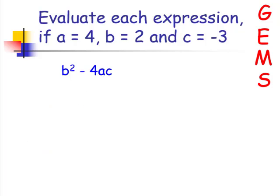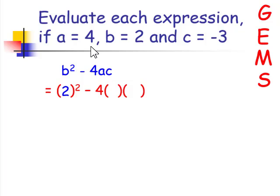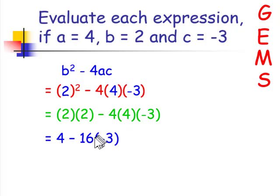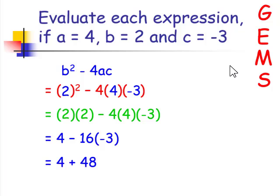First, write it using parentheses, then replace our values: b is 2, a is 4, and c is negative 3. This step in green can be skipped. 2 squared is 2 times 2, which gives us 4. Then 4 times 4 is 16. Then negative 16 times negative 3 gives us positive 48. And 4 plus 48 is 52.